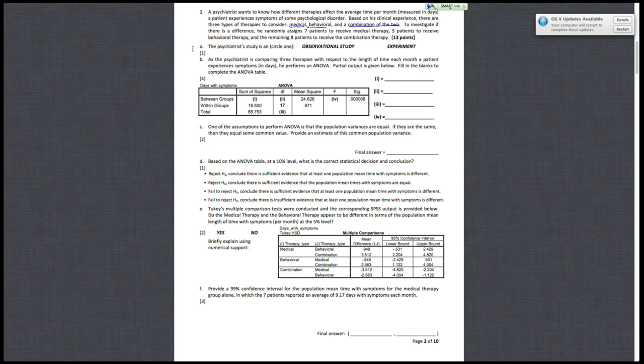Seven patients receive the medical therapy, five get the behavioral, and eight get some kind of combination. Our first question asks us to state whether this is an observational study or an experiment. Because there's an affirmative action going on here, the researcher is randomly assigning. This makes this an experiment.